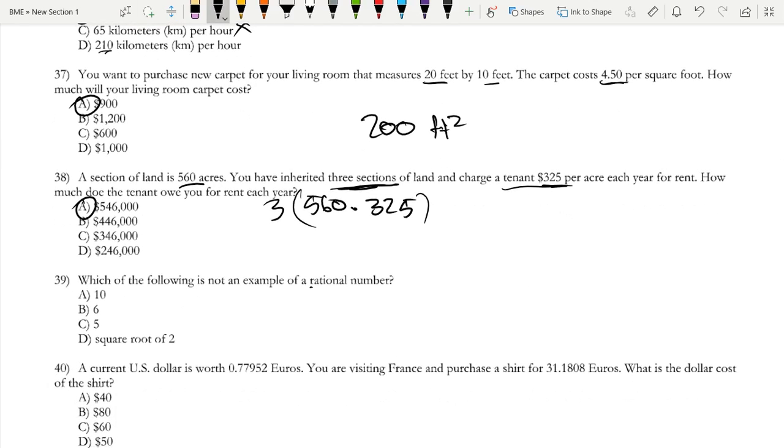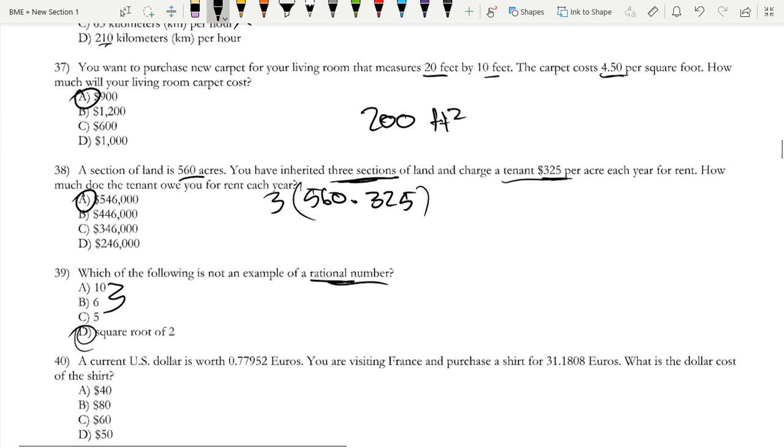Which of the following is not an example of a rational number? So a rational number, just think of this as a number that cannot be expressed accurately on the number line. All these numbers can be expressed precisely on the number line, but this number, square root of two, it goes on like forever, so you cannot accurately express the square root of two on a number line. So it's D, square root of two.